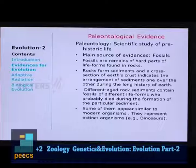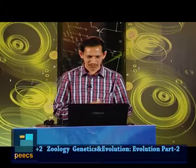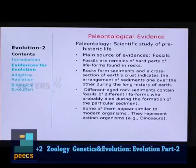Like an animal, rock also grows. Sedimentary rocks grow layer upon layers. If you cut the section of a sedimentary rock, you can see many layers. Each layer indicates a particular time in geological history. Different aged rock sediments contain fossils of different life forms, who probably died during the formation of that particular sediment. So, each layer of rock will have a specific community of organisms.